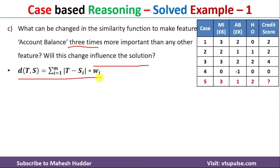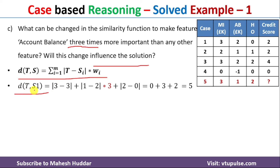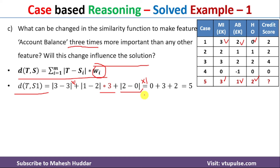Using the updated similarity function, we calculate d(t, s1): |3-3|*1 + |1-2|*3 + |2-0|*1 = 0 + 3 + 2 = 5. The account balance weight is now 3 (shown in the calculation), while the weights for monthly income and homeowner remain 1.